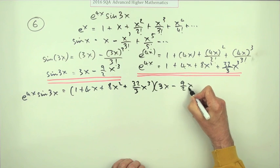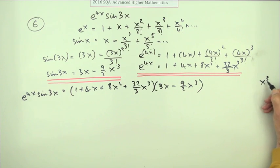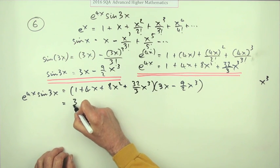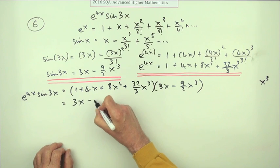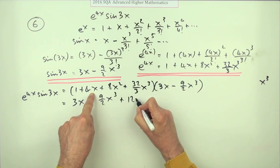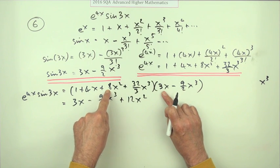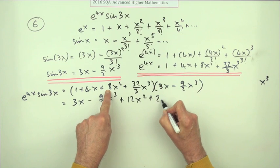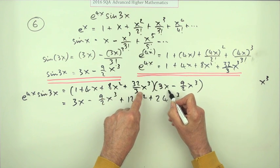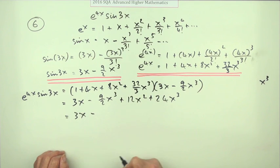That gives us (1 plus 4x plus 8x squared plus 32/3 x cubed) times (3x minus 9/2 x cubed). It looks like a big multiplication but remember we only keep terms up to x cubed. 1 times 3x is 3x; 1 times minus 9/2 x cubed is fine; 4x times 3x gives 12x squared; 4x times the x cubed term gives x to the 4 - not wanted; 8x squared times 3x gives 24x cubed; the remaining terms give x to the 4 or higher, so we ignore them.